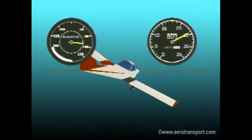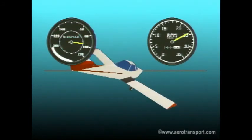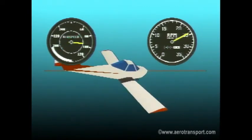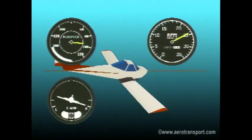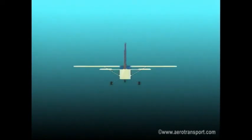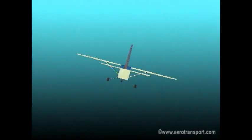As your aircraft progresses through an accurate turn, you should notice the following: the nose moves steadily around the horizon, neither rising nor falling; the airspeed will remain constant. The instruments will read the following way: the turn indicator will show a constant rate of turn and the ball will be centered in the glass tube. The altimeter will show a constant altitude.